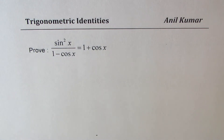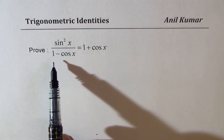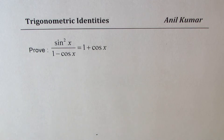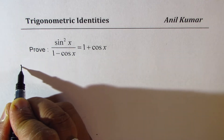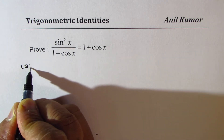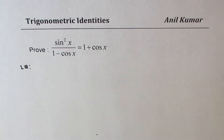I am Anil Kumar. We will take up 4 trigonometric identities to begin with. We need to prove sin square x divided by 1 minus cos x equals to 1 plus cos x. Now in trigonometric identities we should start from one side, so we will choose the left side in this particular case.